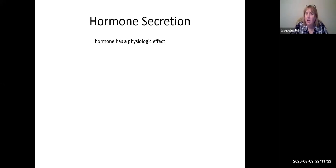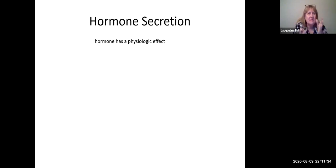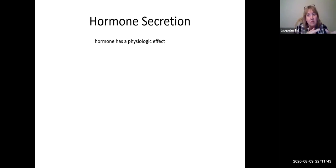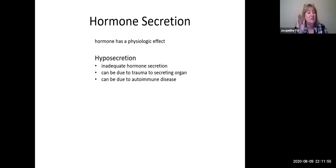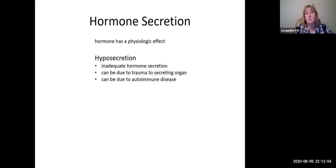Welcome back. In this section, we're going to start talking about some of the hormones being produced by the adenohypophysis and where those hormones have their effect. When talking about specific hormones from now on, I'll discuss the normal physiological effect, and then what happens if you don't have enough — what we call hyposecretion, meaning inadequate hormone secretion. Our feedback mechanism isn't working correctly, and this could be due to trauma to the organ secreting it, not enough releasing hormone, or autoimmune diseases.